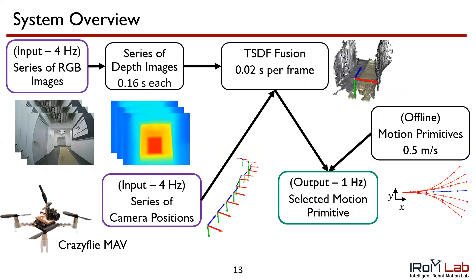For hardware experiments, we implement MonoNav on a Crazyflie, a 37-gram MAV. Camera readings, depth estimation, and fusion occur at 3 to 4 Hz, and replanning occurs at 1 Hz. Each ZoeDepth inference takes 0.11 to 0.16 seconds, fusion takes 0.02 seconds, and motion primitive selection takes 0.01 seconds.